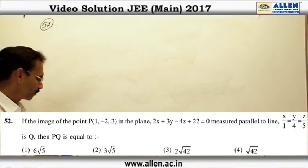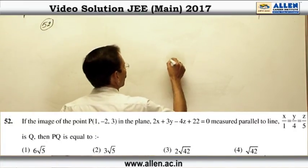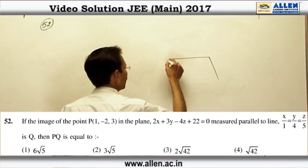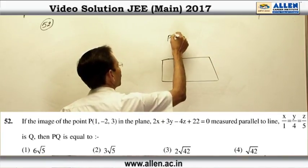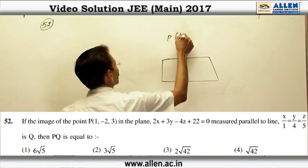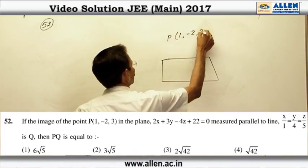Question number 52: there is a plane and a point P. It is 1 comma minus 2 comma 3.